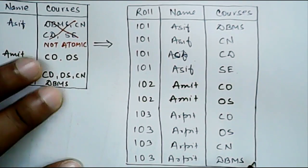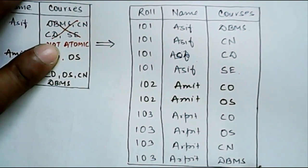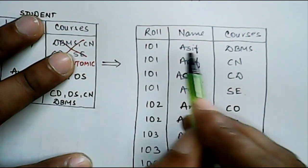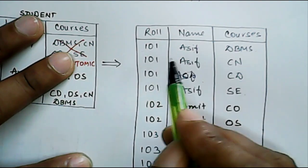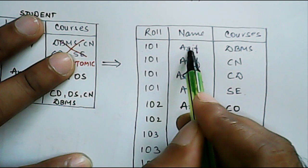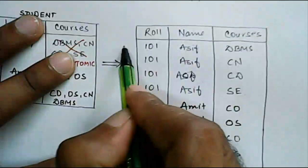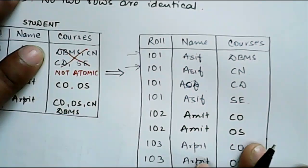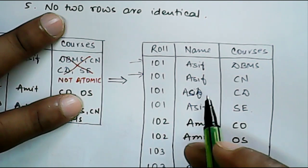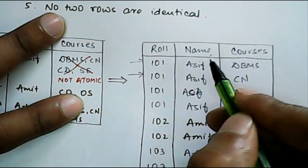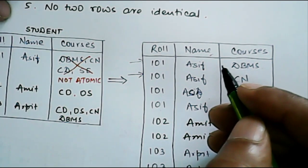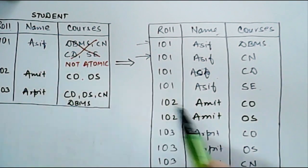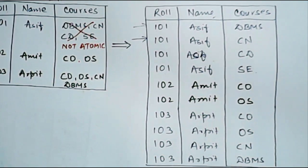Now if you see, all the criteria are satisfied by this modified database. All the records are unique as you can see that these two fields are same but the course is different. So these two records are different, fine? Now this column must have unique names. So the columns are already, I mean, all the criteria was already satisfied. The only thing was that the value was not atomic. So it is now atomic and it is in first normal form.